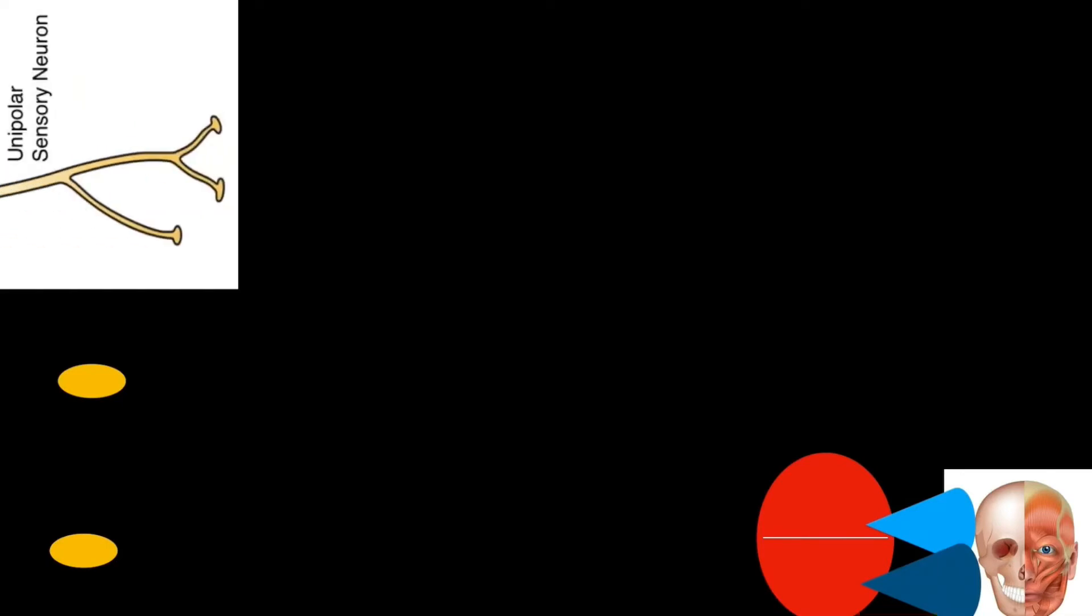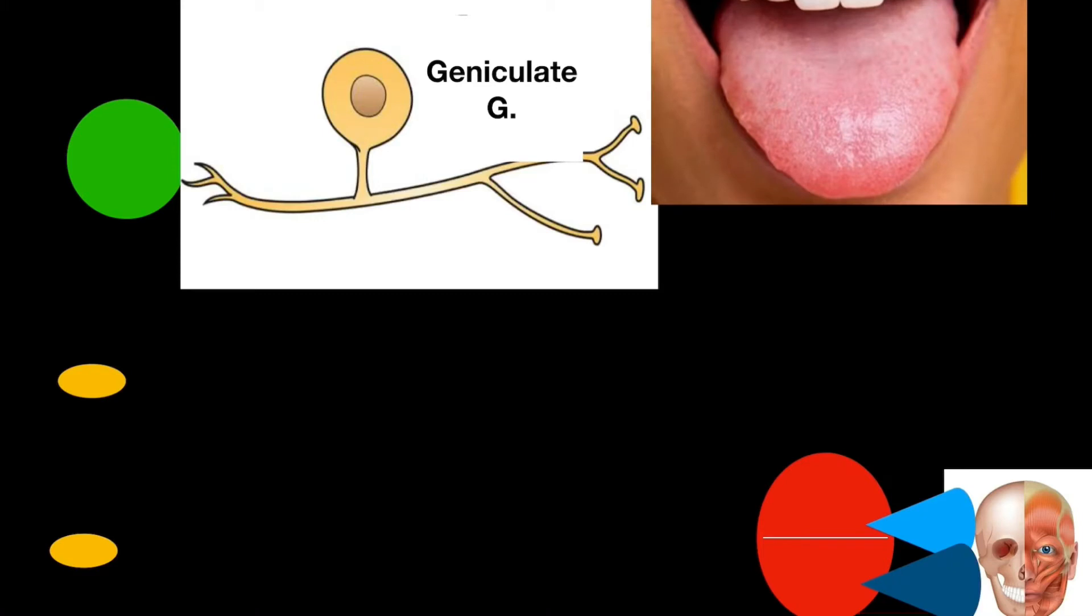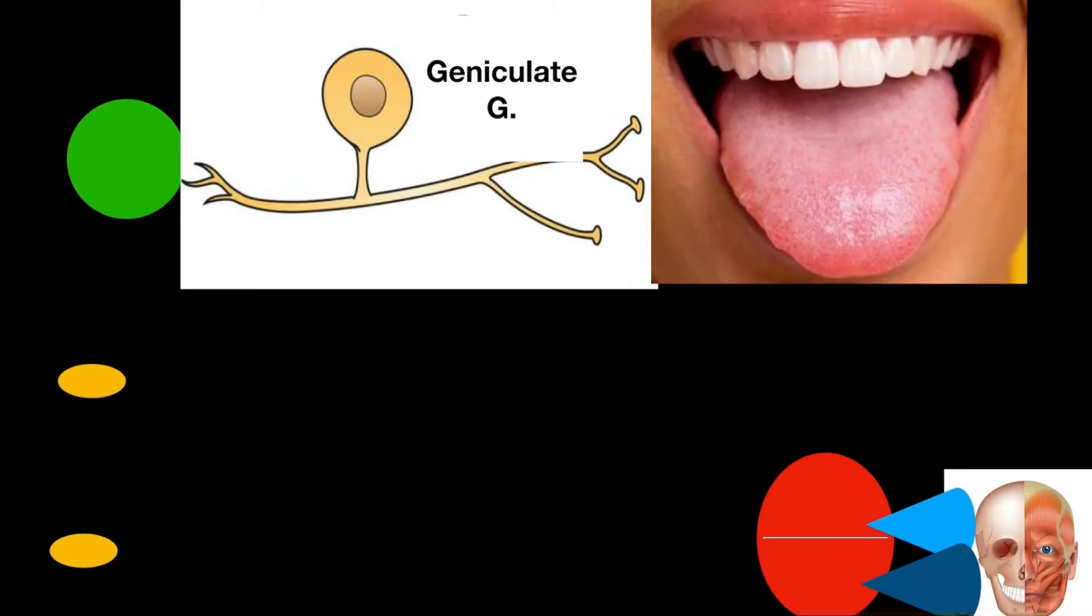Let us keep it aside for a moment and concentrate on other nuclei of the facial nerve. That is sensory nucleus which is upper part of the nucleus of Tractus solitarius. And it receives central process of the pseudo unipolar neurons located in geniculate ganglia. And receives sensations of taste from anterior two-third of tongue, floor of mouth and palate.